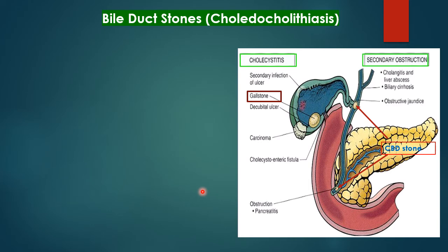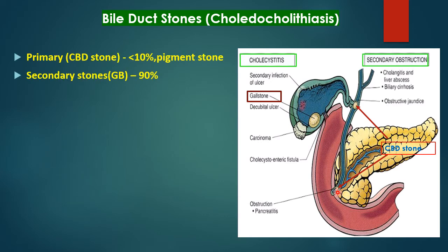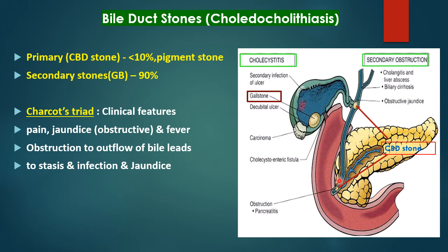Bile duct stones — choledocholithiasis. The gallbladder is connected by the cystic duct to the bile ducts, including the common bile duct and common hepatic duct. 90% of CBD stones come from the gallbladder as secondary stones. 10%, especially pigment stones, develop primarily de novo in the bile ducts with no gallstones present. Stones in the bile ducts cause obstruction leading to jaundice, pain, and fever — known as Charcot's triad — which is diagnostic of infection of the bile ducts due to obstruction by stones. This obstruction leads to stasis and secondary infection. In addition, Reynolds pentad includes Charcot's triad plus hypotension and mental symptoms — features of ascending cholangitis and impending septicemia and shock.